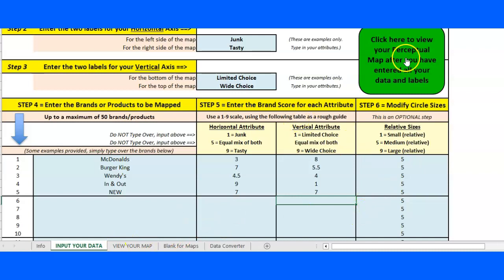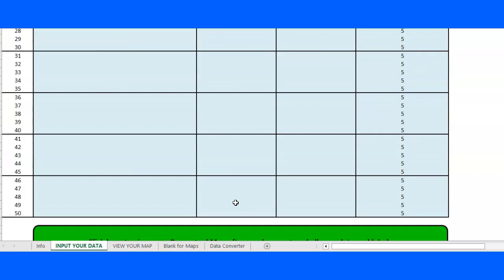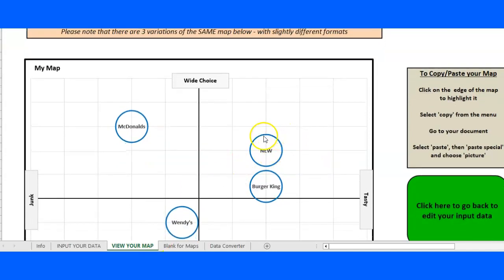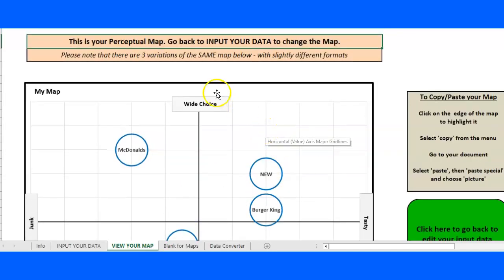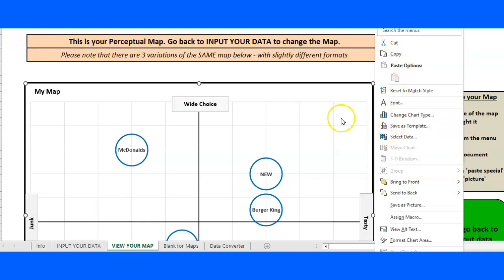Once it's done, you can click here or click down there—you can enter up to 50 brands as you can see. Immediately you go to the map, and this is it. That's the new one I put there. There are three variations of this map as it says. To copy and paste, you just click on it and then you can go to the copy menu and put it wherever you like.